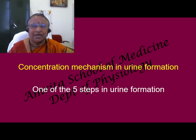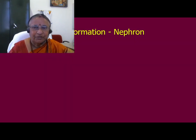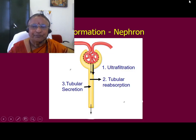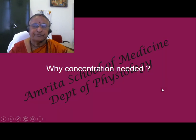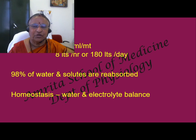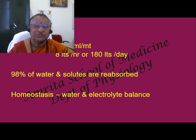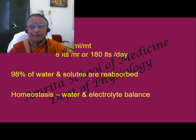Concentration mechanism in urine formation comprises one of the five steps in urine formation. You know the nephron — you have got the glomerular filtration, then tubular reabsorption, tubular secretion, then the concentration of urine and acidification, which forms the five steps in urine formation. Why do you need a concentration of urine? The normal filtration rate, or what you call GFR — glomerular filtration rate — is around 125 ml per minute, which amounts to around 8 liters per hour or 180 liters per day. You can imagine what the issue would be if 180 liters were passed as urine.